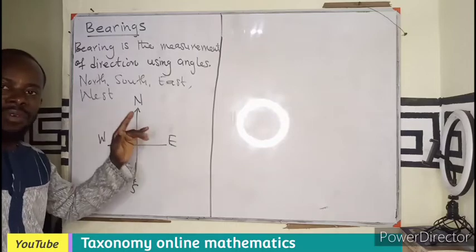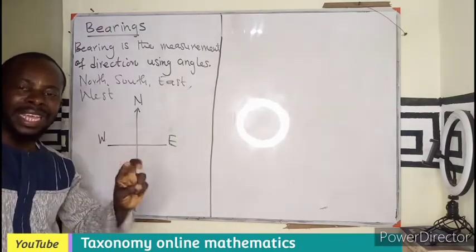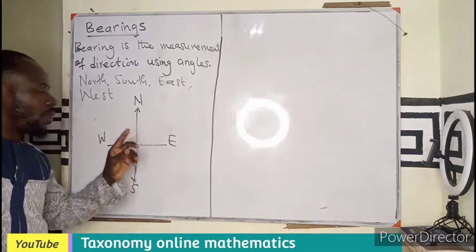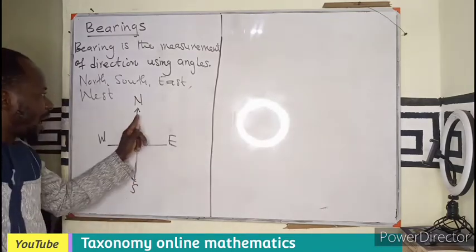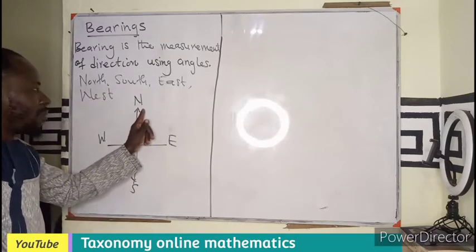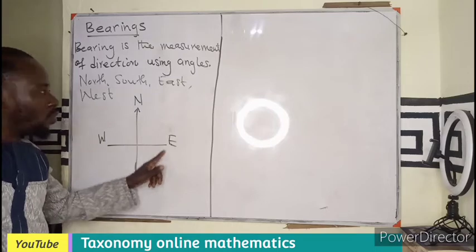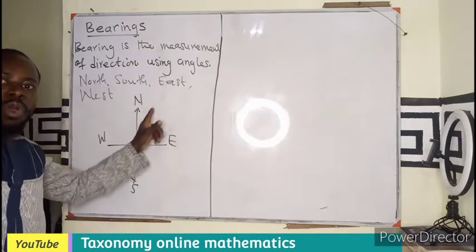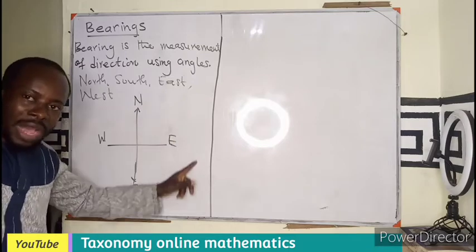Measurement of angles in terms of bearing is done in two ways. One, we call it a three-figure measurement, whereby your measurement or your movement is always measured from the north. Your measurement is always measured from the north in clockwise direction.